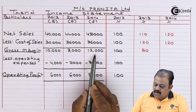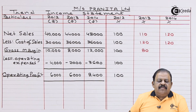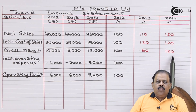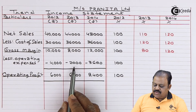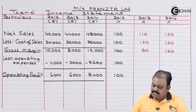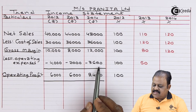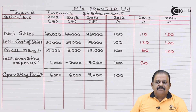Gross margin for 2014: 12,000 divided by 10,000 multiplied by 100 equals 120 percent. Operating expenses for 2013: 2,000 divided by 4,000 multiplied by 100 equals 50 percent. For 2014 operating expenses: 3,600 divided by 4,000 multiplied by 100 equals 90 percent.